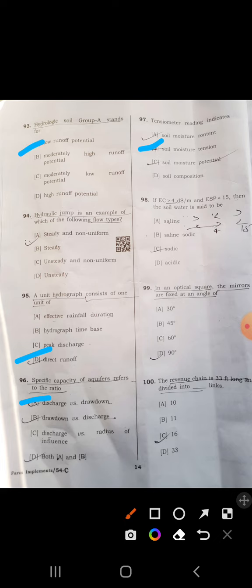Ninety-ninth: in optical square, the mirrors are fixed at an angle of 90 degrees. D is correct. Last question, 100: Gunter's chain is 66 feet long and divided into 100 links. Okay friends, I hope this video is helpful for you. Thanks for watching this video.